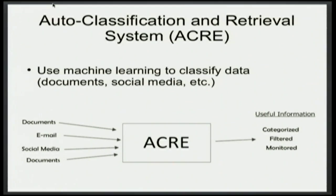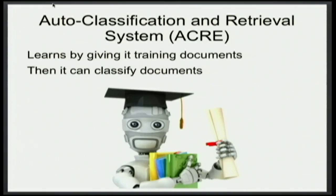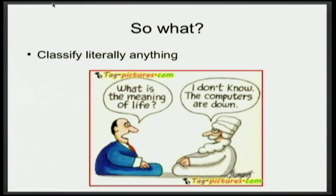A lot of the talks here have been talking about how to classify numeric data. We actually work more with text-based data. You have documents, emails, social media, different things, and then we categorize it based on training and then testing, and then you get filtered and categorized data. There's a good visualization. You can use this to classify literally anything.